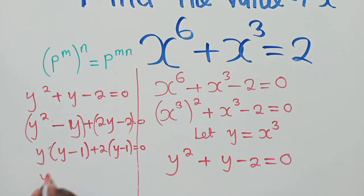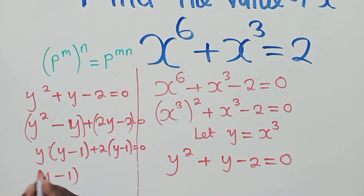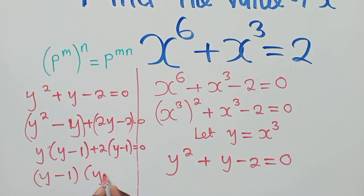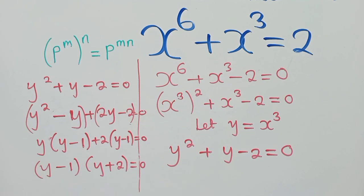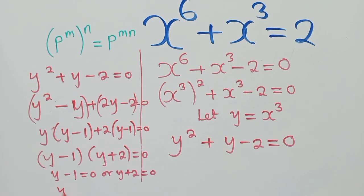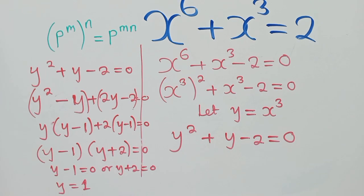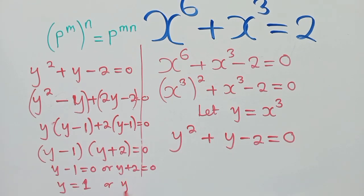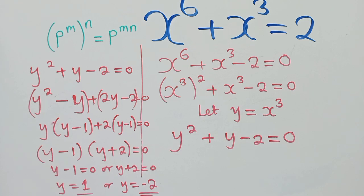So next here we shall say y minus 1 and y plus 2 is equal to 0. Then we say y minus 1 is equal to 0 or y plus 2 is equal to 0. That implies that y is equal to 1 or y is equal to negative 2.